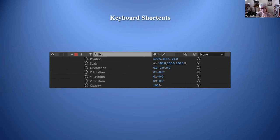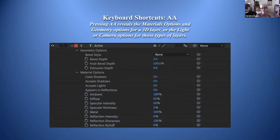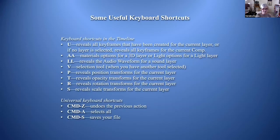For transform shortcuts: press P for position, S for scale, R for rotation, and T for opacity. You can see these at the bottom of the keyboard shortcuts section — T is opacity, R is rotation, S is scale, and P is position. These are keyboard shortcuts in the timeline when working with After Effects.